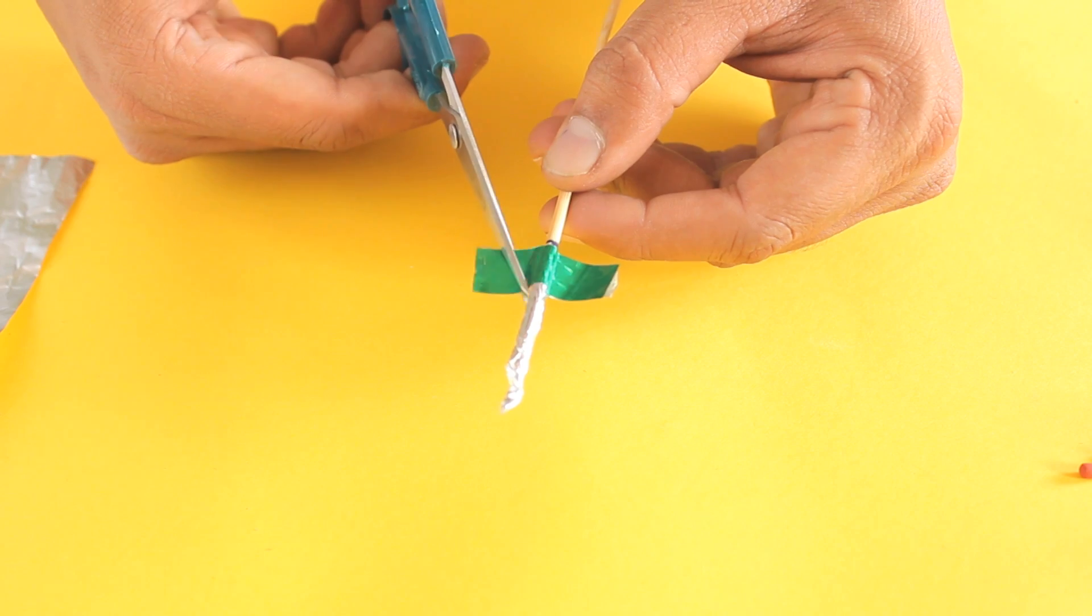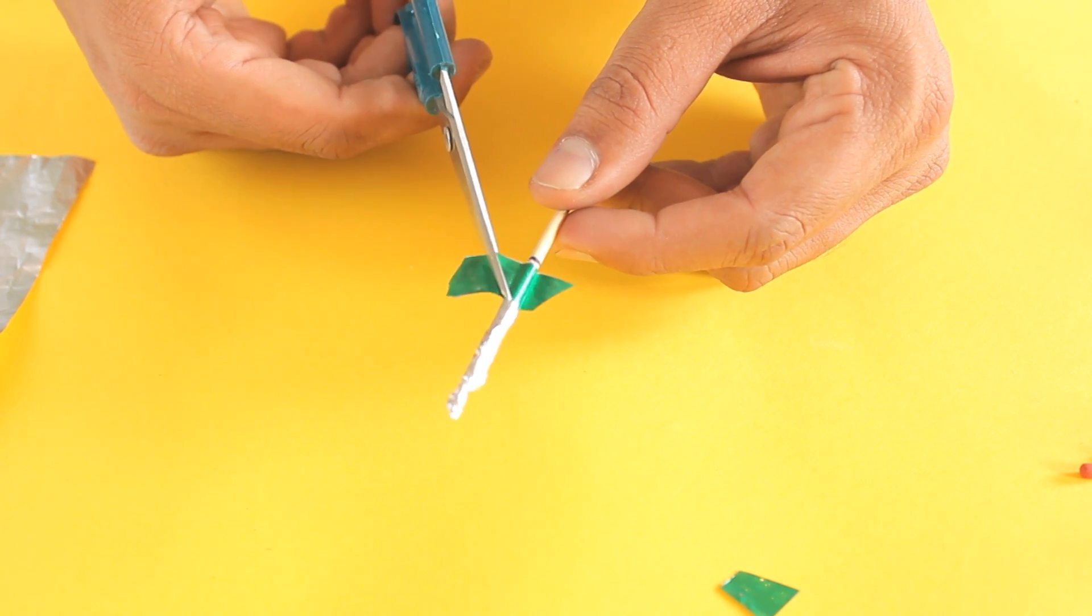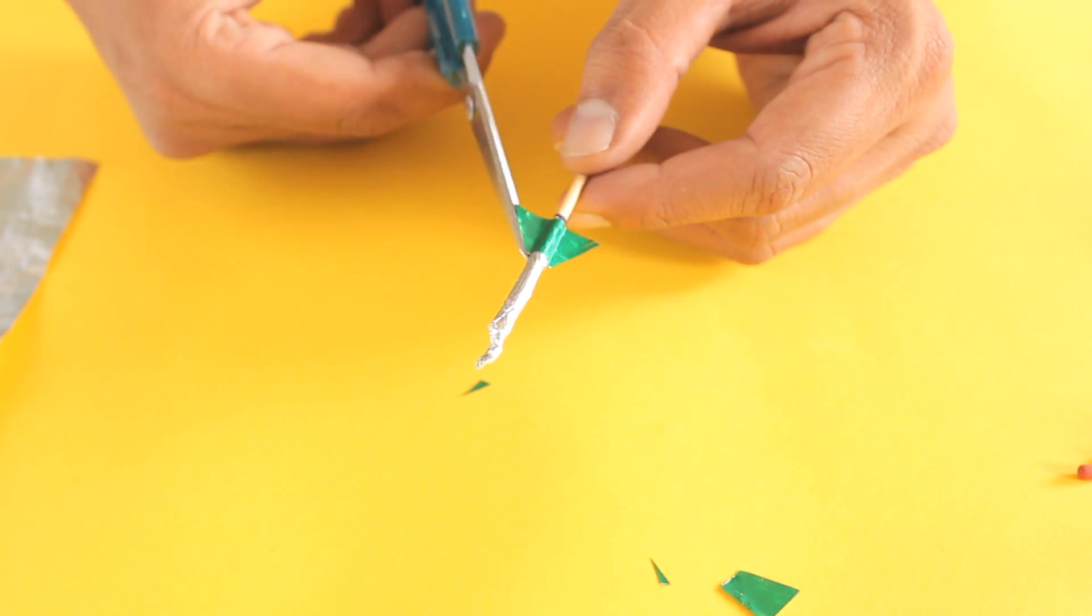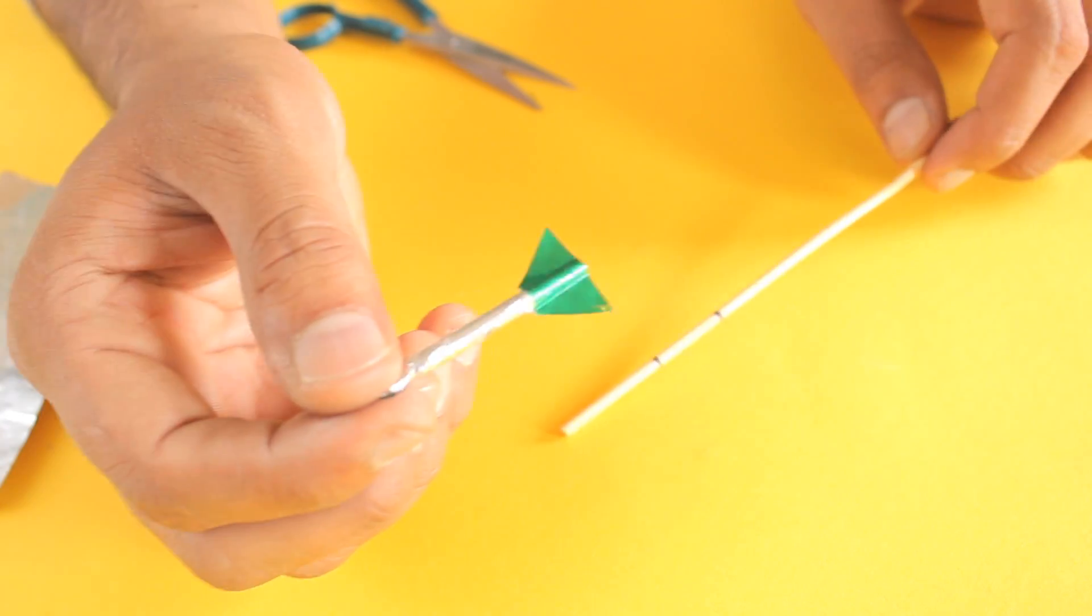Now cut the tape in this shape that it looks like a rocket. Here is our final rocket.